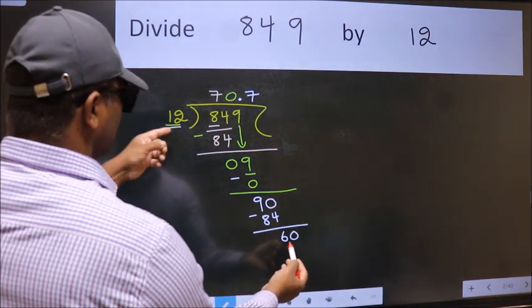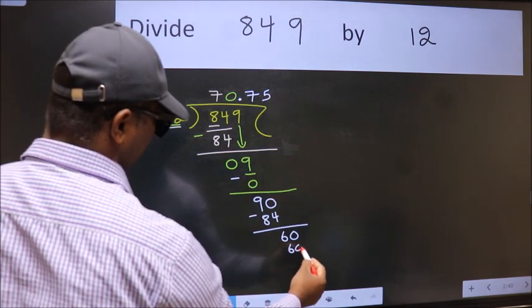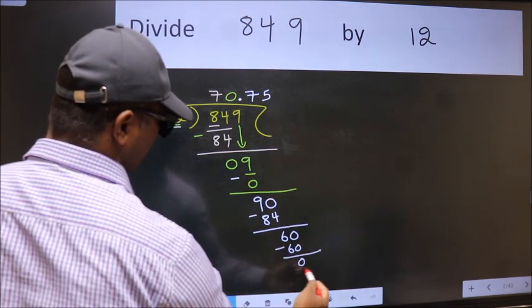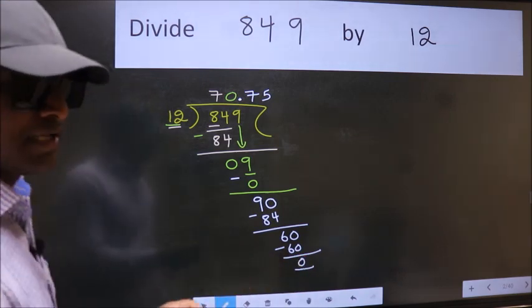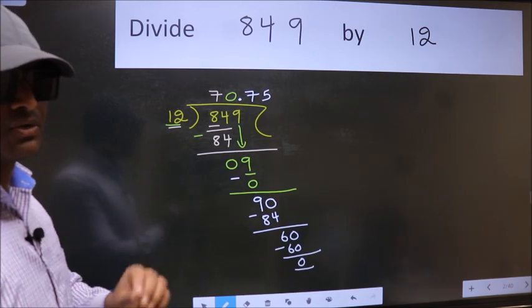When do we get 60 in 12 table? 12 fives, 60. Now we subtract. We get 0. Did you understand where the mistake happens? You should not do that mistake.